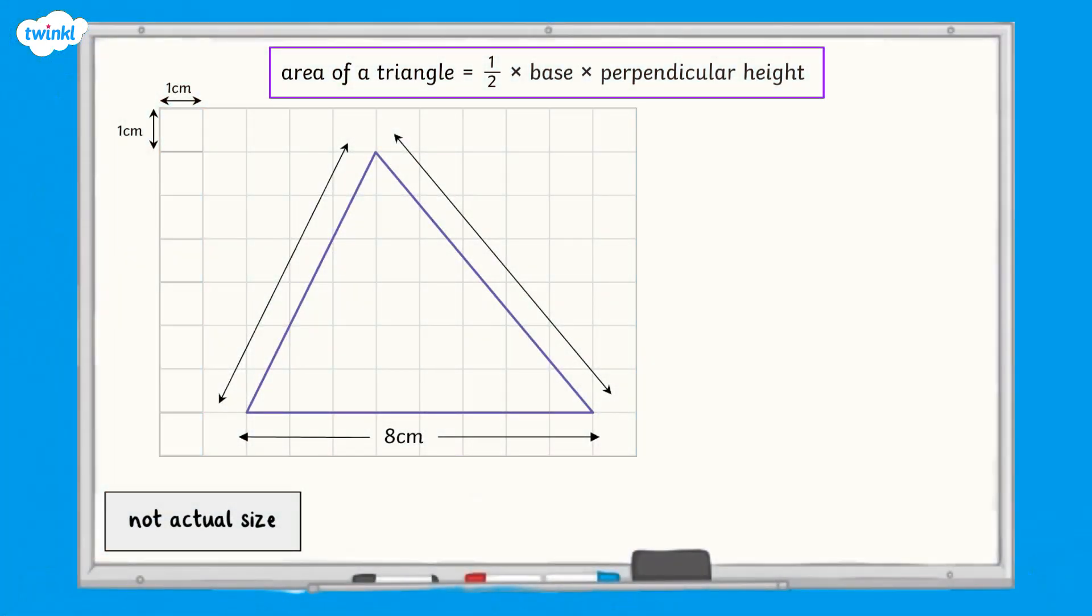For example, let's look at this one. None of the sides of this triangle meet to make a right angle. If we take the bottom horizontal line as the base, we can mark the perpendicular height by drawing a vertical line from the base to the opposite corner, like this.